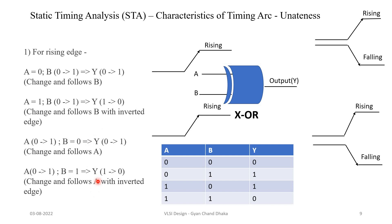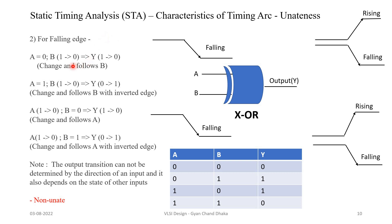During the falling edge transition, whenever there is a falling edge at B and input A is constant 0, the output will also fall and follow B. But whenever there is a falling transition at B and A is 1, the output will rise. So again, for a falling edge transition at input B, the output will either rise or fall — we cannot define a proper relationship between input and output. This kind of relationship is called non-unate.